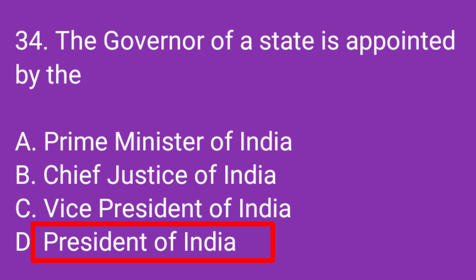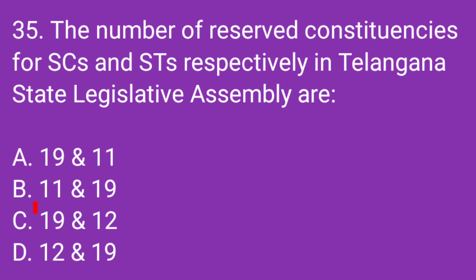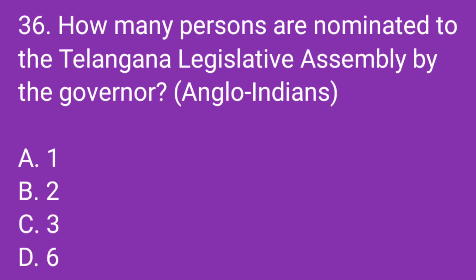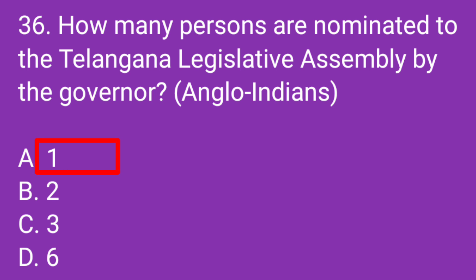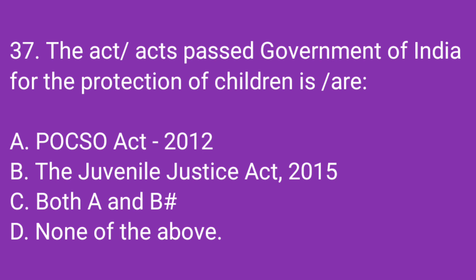Question number 34: The Governor of a state is appointed by the? Correct answer: President of India. Question number 35: The number of reserved constituencies for SCs and STs respectively in Telangana State Legislative Assembly are? Correct answer: 19 and 12. Question number 36: How many persons are nominated to the Telangana Legislative Assembly by the Governor? Correct answer: 1. Question number 37: The act or acts passed by the Government of India for the protection of children is? Correct answer: Both A and B — POCSO Act 2012 and the Juvenile Justice Act 2015. Thank you for watching this video.